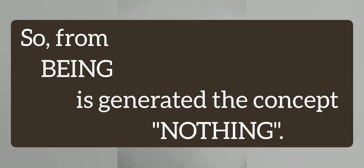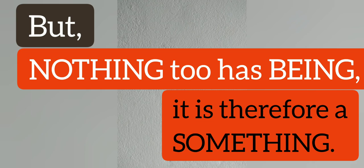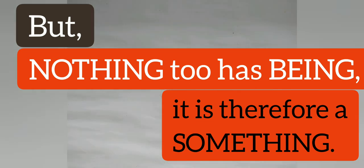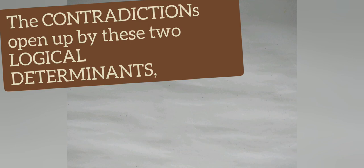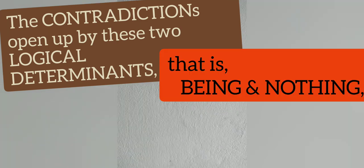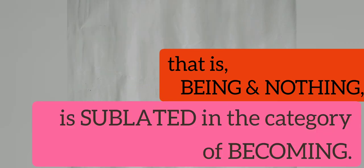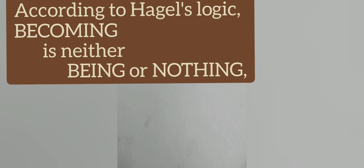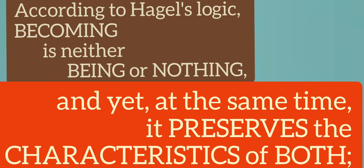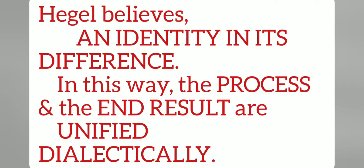To be something that simply is, with no other qualities, is to be nothing. So from being is derived the concept of nothing, but nothing too has being — it is therefore something. The contradictions opened up by these two logical determinants — that is, being and nothing — are sublated in the category of becoming. Becoming is neither being nor nothing, and yet, at the same time, it preserves the characteristics of both. It contains an identity in its difference. In this way, the process and the end result are unified dialectically.